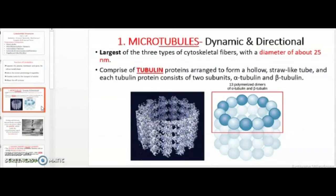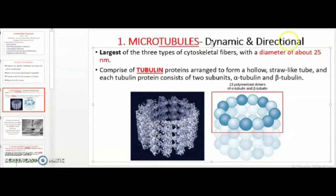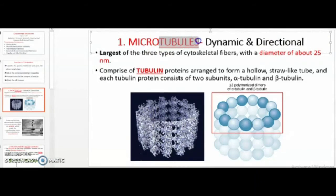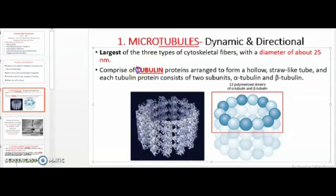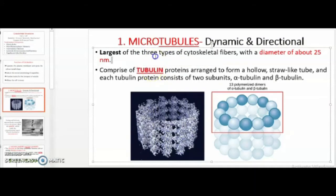The first component is the microtubules. These are the largest in diameter among all three cytoskeletal fibers, with a diameter of approximately 25 nanometers — and 1 meter equals 10 to the power of 9 nanometers, just to give the scale. The name 'microtubule' is indicative: 'tubule' refers to tubulin, so these cytoskeletal filaments are made up of proteins called tubulins. Hence, microtubules — the name indicates the tubulin protein.